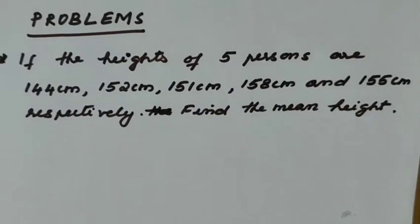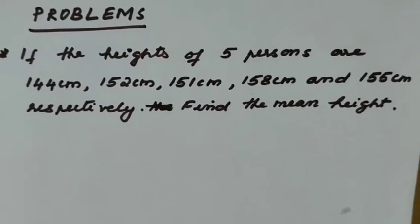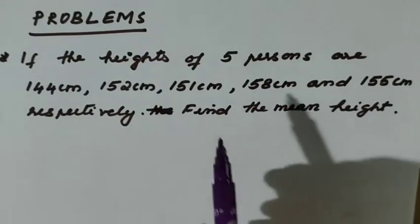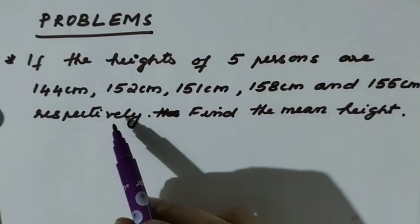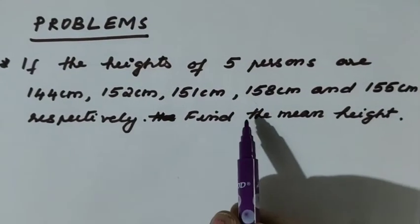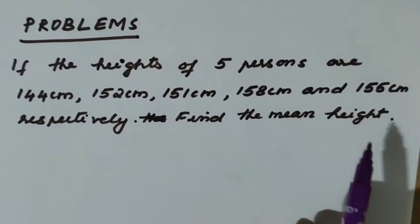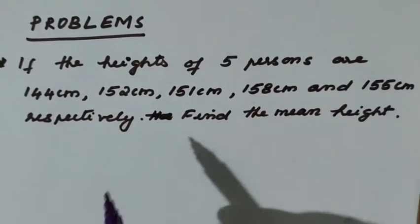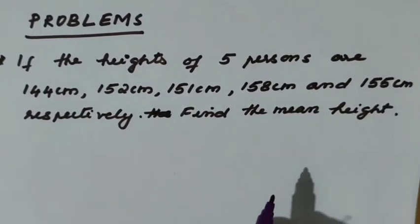Today we are going to do problems based on mean and range. The first question: if the heights of five persons are 144 cm, 152 cm, 151 cm, 158 cm, and 155 cm respectively, find the mean height.